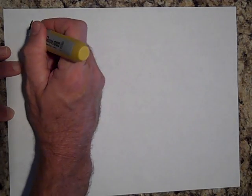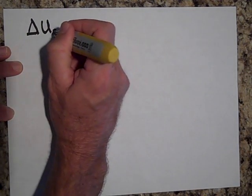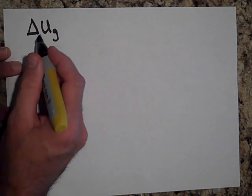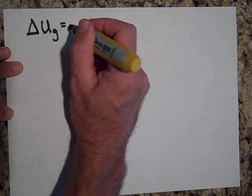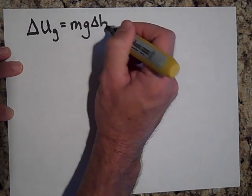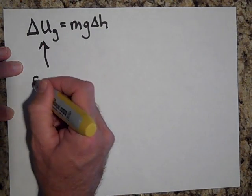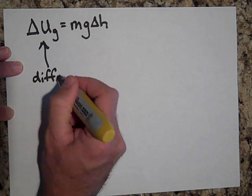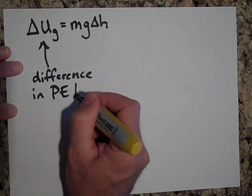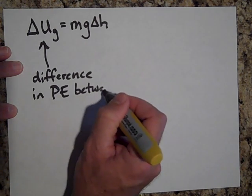If you remember from last year, you said that gravitational potential energy was MGH. We're going to say that that's not PE anymore. That's the change in potential energy. We're going to use a U this year for potential energy. And so delta U sub G is equal to M times G, and with H, I'm going to call it a delta H. This gives you a difference in potential energy between two points that are a distance H apart.